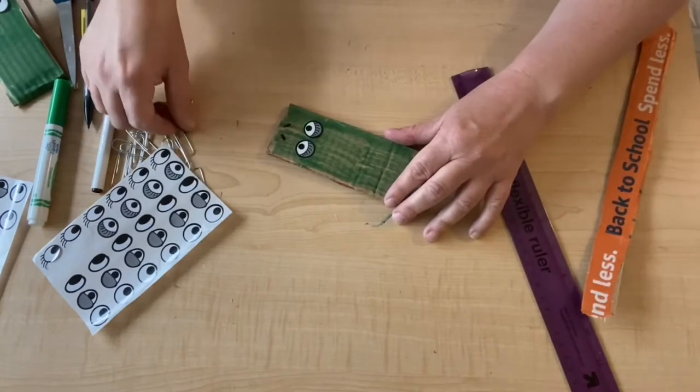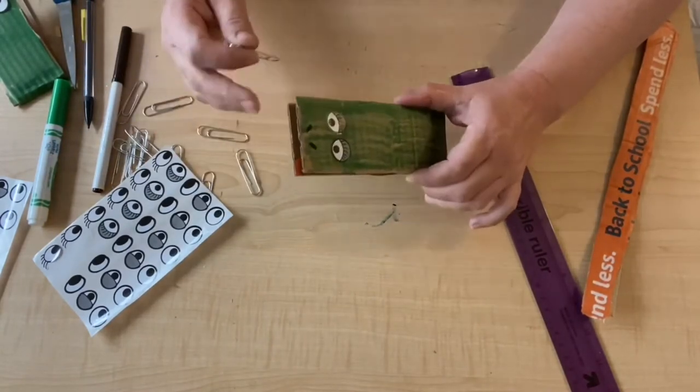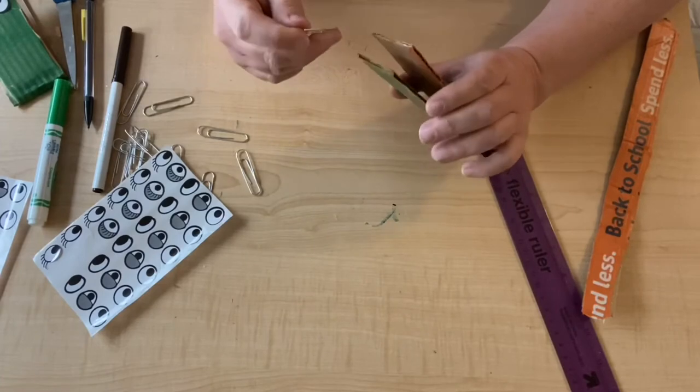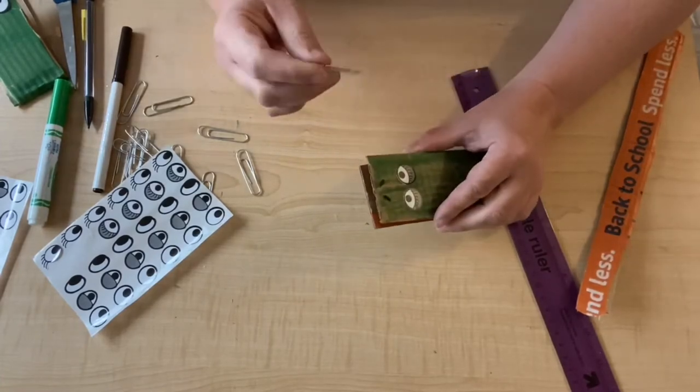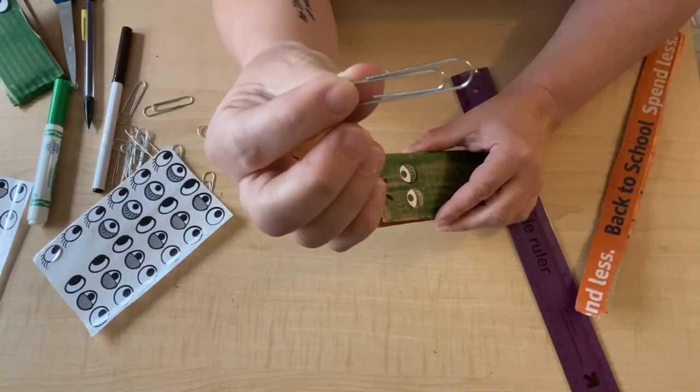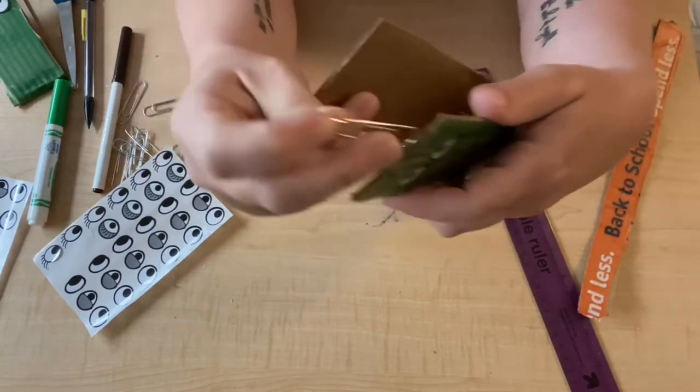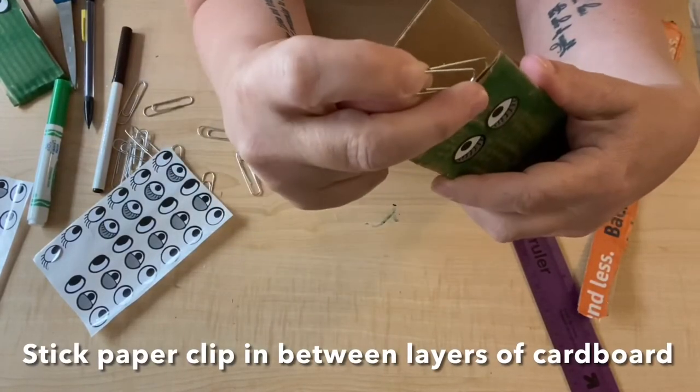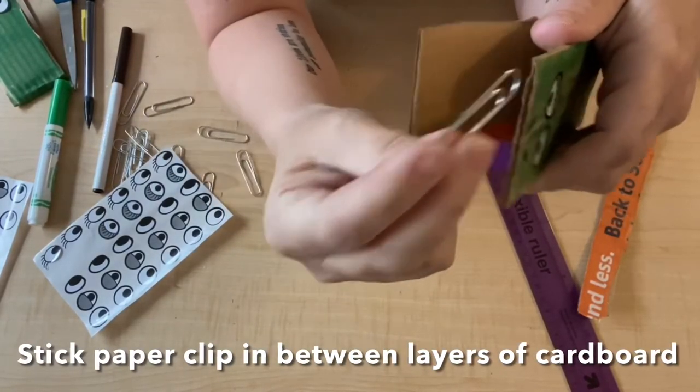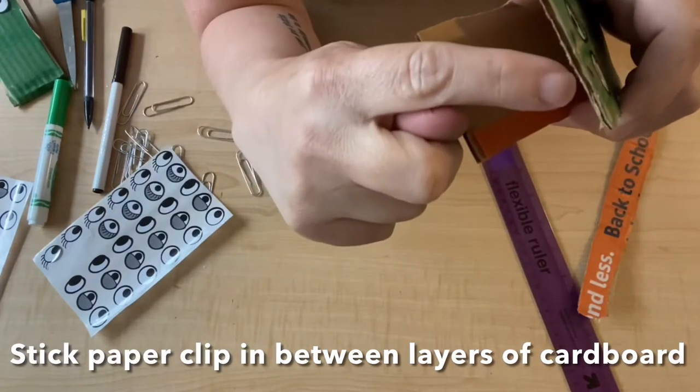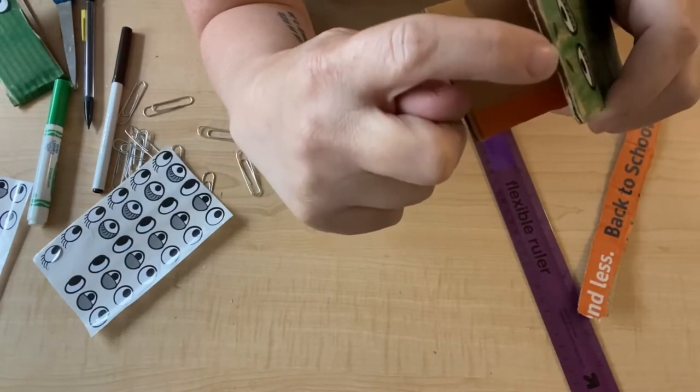Okay so the last part that we need to do is to actually make this so it is a castanet, so it has sounds. So to do this we're going to use a paper clip and we're going to stick it here in between these layers of cardboard. You see how the cardboard is kind of two pieces right here and there's some stuff in the middle.